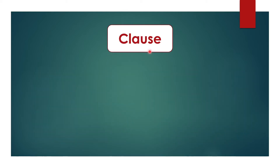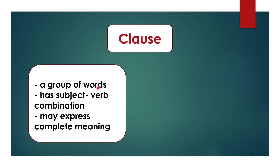Now let us know what is a clause. A clause means a group of words — this is similar to a phrase. In a phrase also we get a group of words, but the difference is here: a clause has a subject-verb combination, which is absent in a phrase. A clause may express complete meaning, but not all the time. Sometimes a clause is independent and expresses complete meaning; sometimes it is dependent on another sentence and used as part of that sentence.